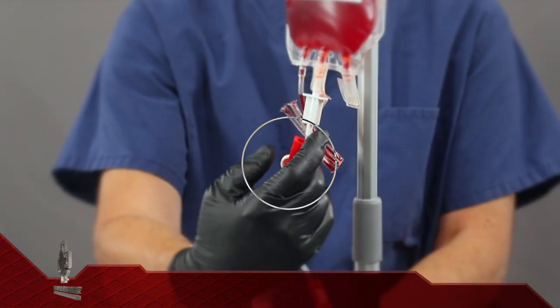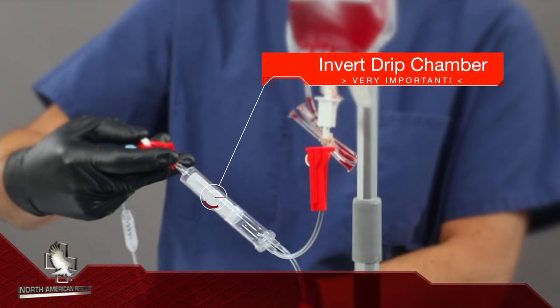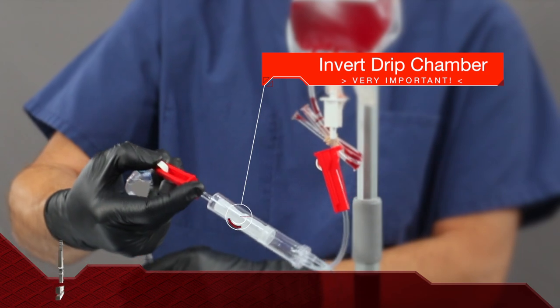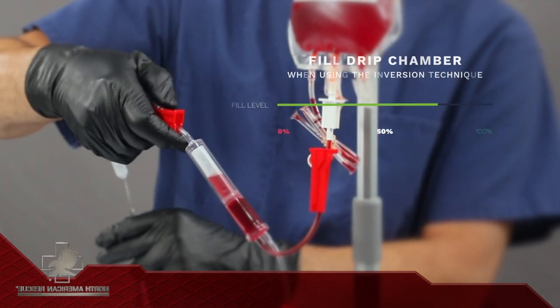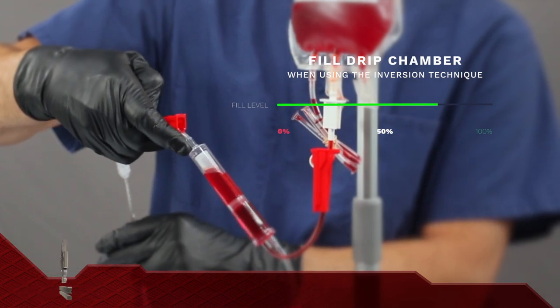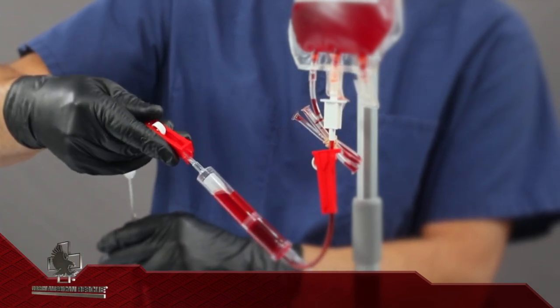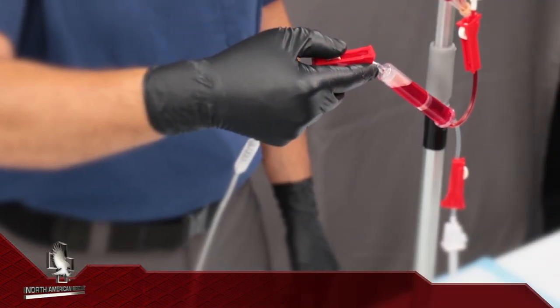Open the roller clamp under this bag. It is very important to now invert the drip chamber to facilitate proper priming. Once inverted, open the roller clamp downstream of the drip chamber and allow the inverted drip chamber to fill at least 50%, 75% is optimal, and then close the downstream clamp. This purges air from the drip chamber and filter and facilitates proper priming of the tubing.